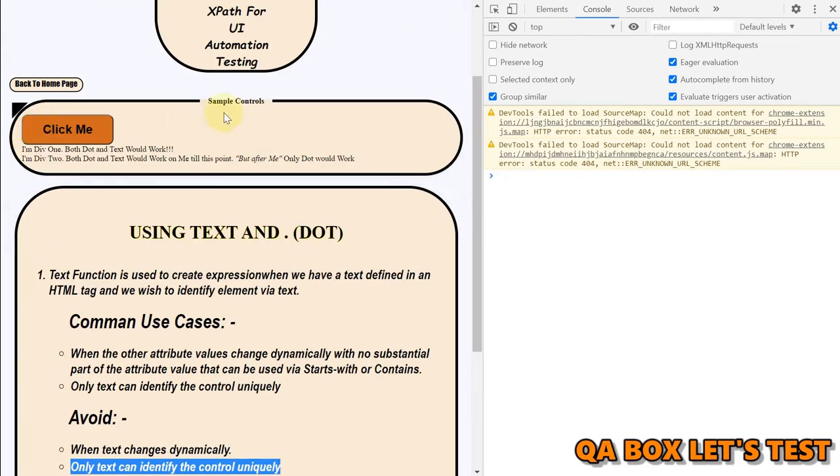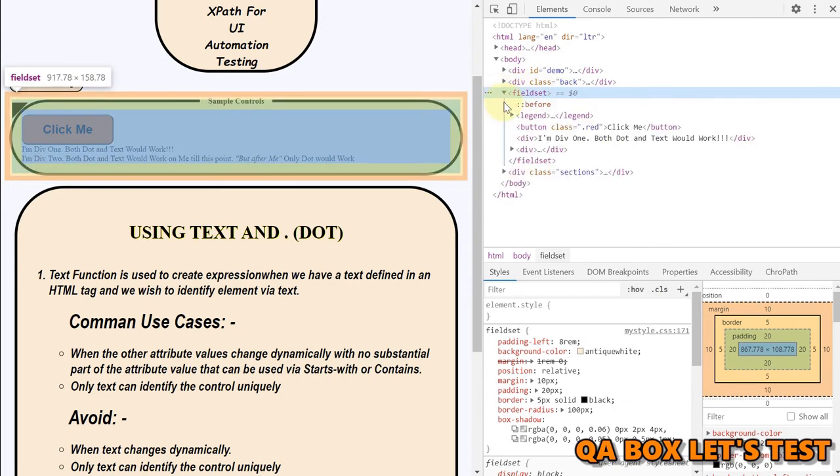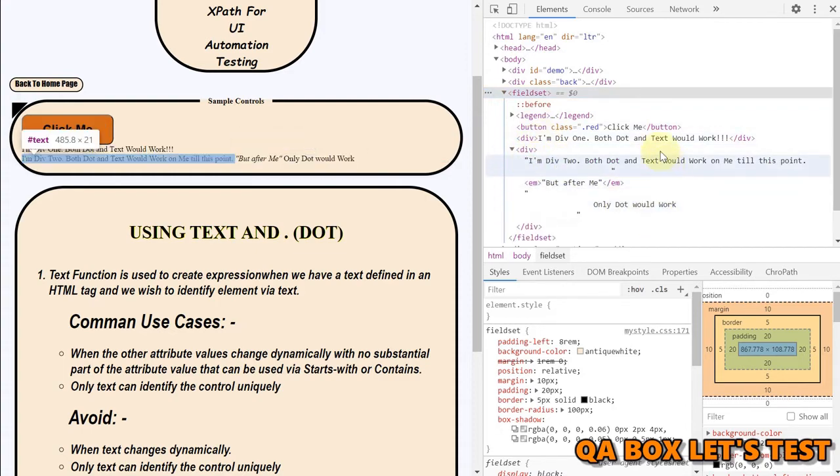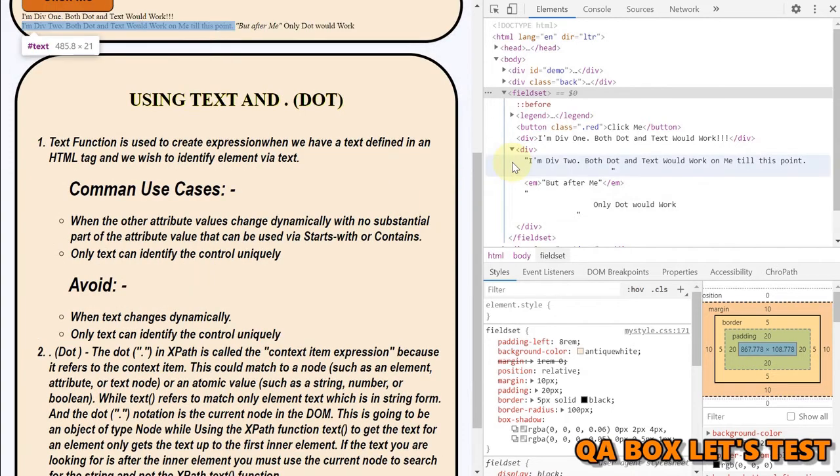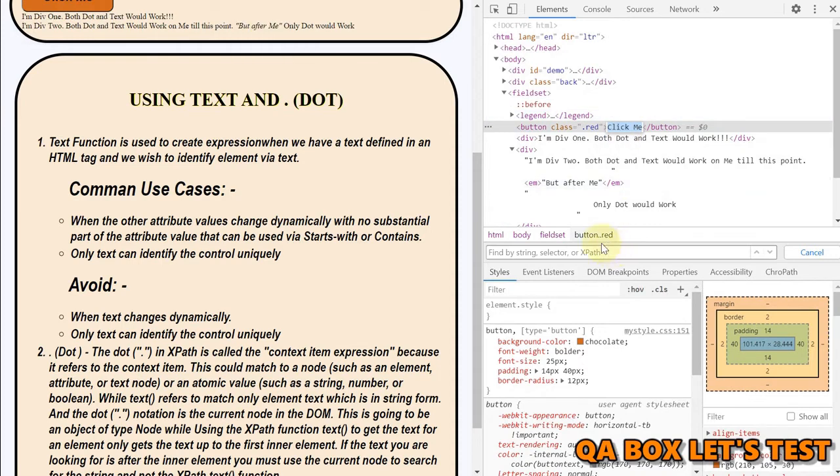Now, let us write a function. So we are going to work on this control. So let me show you what this control is and we have a field set and inside that we have this button. Then we have this div and inside that we have got one more div. So we are going to cover both dot and text function. So let us first cover the text thing. So as you could see in there, I can identify this button using this class dot red, but I would like to do it using this text.